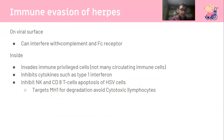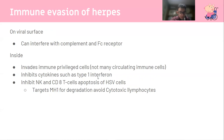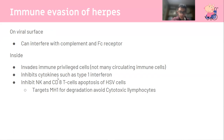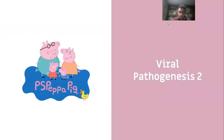Herpes can evade the immune system in two ways: it can interfere with complement - particularly C3 - and interfere with the Fc receptor. As mentioned, it invades immune-privileged sites where there aren't many circulating immune cells, and inhibits pro-inflammatory cytokines such as type 1 interferons. It also inhibits direct cell lysis by inhibiting NK cells. NK cells kill cells that lack MHC class I - they also kill tumor cells. CD8 cytotoxic T cells, when stimulated by CD4 T cells that recognize an antigen, will seek and destroy cells displaying that antigen.